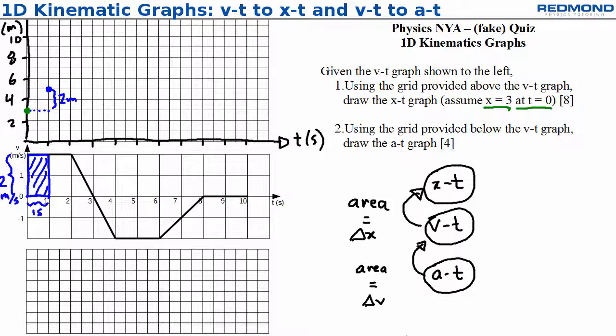For the next second, I again have an area of 2 meters, so I add 2 more meters to my position at 1 second to get X equals 7 meters at 2 seconds.